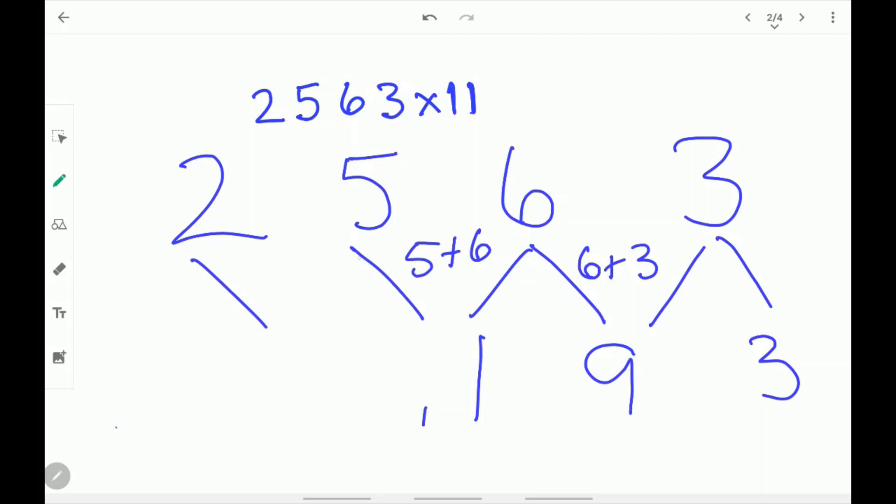Next add 2 plus 5. 2 plus 5 is 7. Now remember the carry. So 7 plus 1 is 8. Write 8 over here. Next write the 2 as it is.